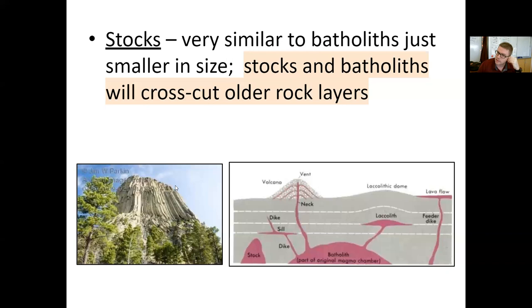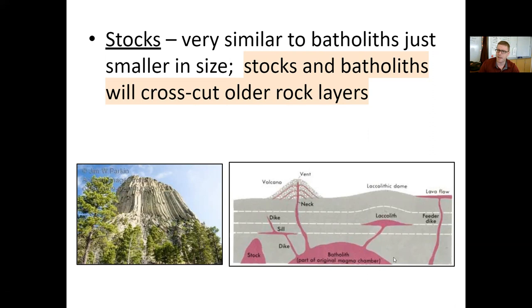Over time, it was either uplifted and/or the surrounding area began eroding away. This graphic is a great picture to show many of the different features we're talking about today. Here's the batholith — the huge feature that was part of the original magma chamber — and it feeds so many of the different features. Some of that magma may have worked its way up to the volcano; some may have formed dikes, sills, and laccoliths. The batholith is part of the original magma chamber. Compare that to the stock — similar in height but much more narrow. Both stocks and batholiths cut across rock layers and were part of that ancient magma chamber. Stock is just smaller than the batholith.